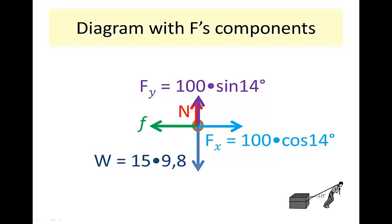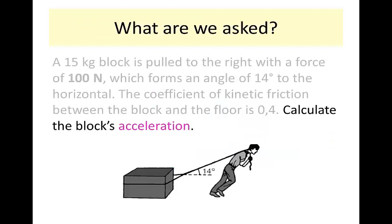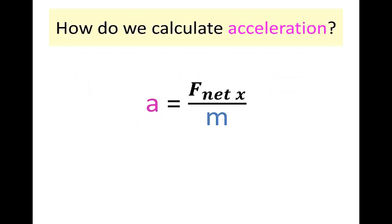The first part of our strategy is to ask: what are we being asked? We need to calculate the block's acceleration. We use Newton's second law, F_net = ma, rearranged to a = F_net / m. In this situation, acceleration is horizontal as the block slides along the surface. So the relevant net force is in the horizontal, X dimension. Our working formula is a = F_net_x / m.